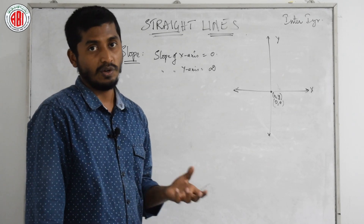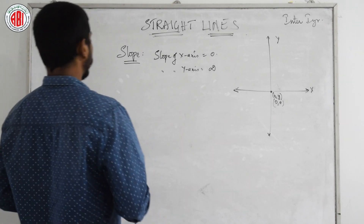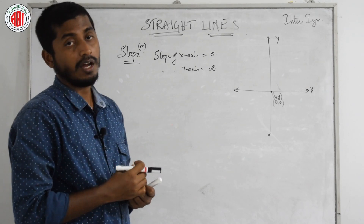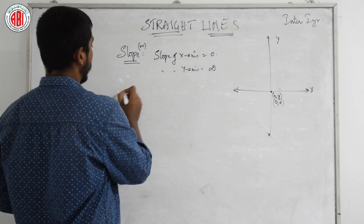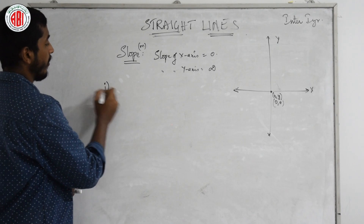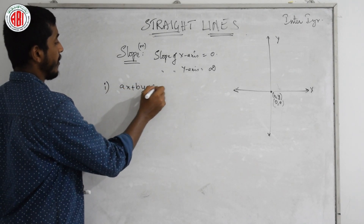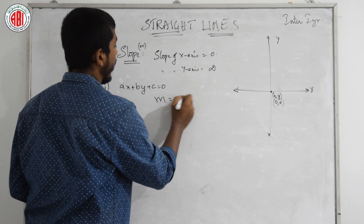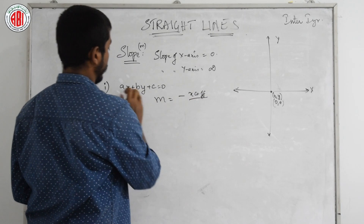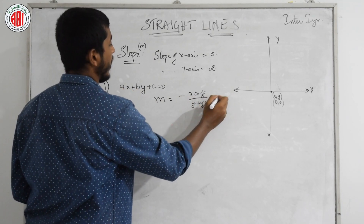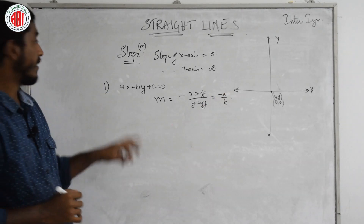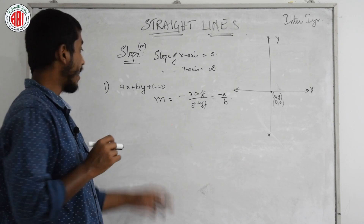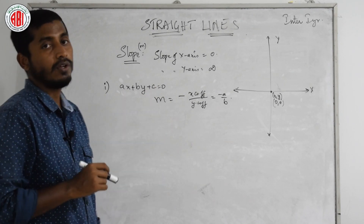Now let us generalize the slope formula for different equations. Slope is always denoted by m. The first form is when an equation is given in the form ax + by + c = 0. In that case, the slope m is equal to the negative of the coefficient of x divided by the coefficient of y — simply written as minus a by b.